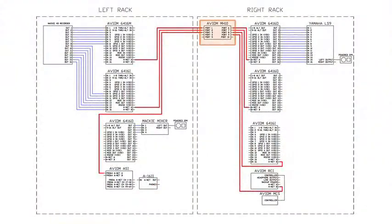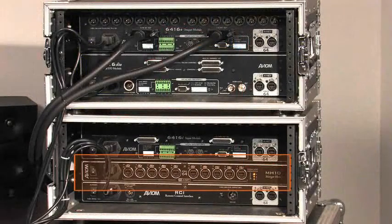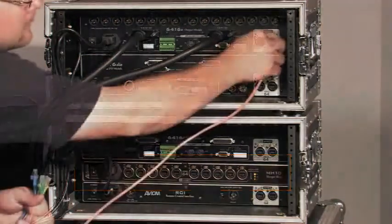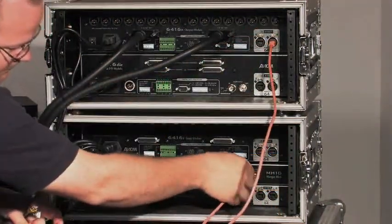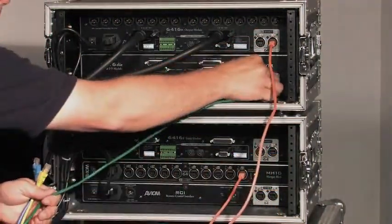If a star topology best suits your application, we can do that as well by incorporating an MH10 merger hub. The MH10 has 10 ports on the back that allows you to form the star topology by simply plugging the devices on the network into the merger hub.